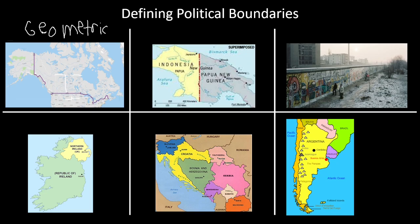The next one is also a geometric boundary, separating Indonesia from Papua New Guinea. But this is also a superimposed boundary. A superimposed boundary means the boundary was drawn out by outside forces — it was imposed by external people, politically, from outside.